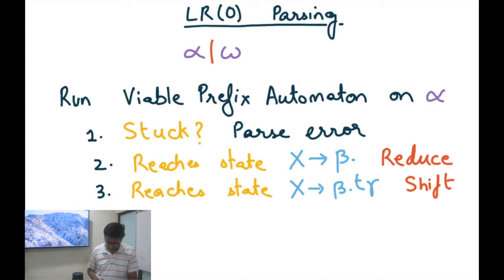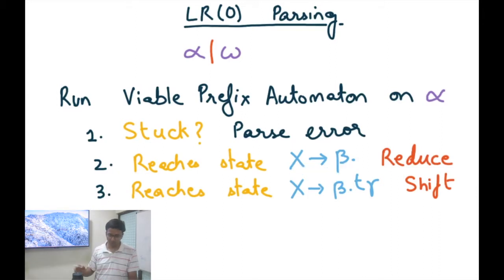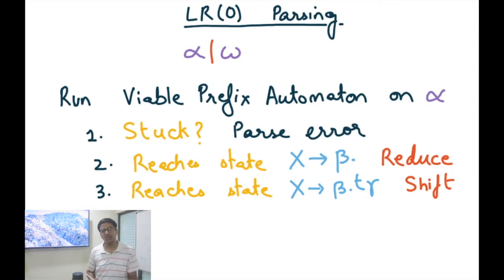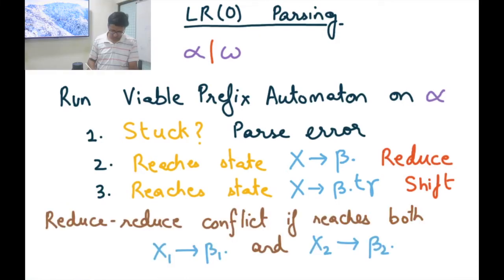So the idea is: if we reach a state X→β• where the dot is at the rightmost position, we reduce. If the dot is somewhere in the middle or at the beginning, we shift. If the automaton can reach both these states simultaneously, that is a shift-reduce conflict.